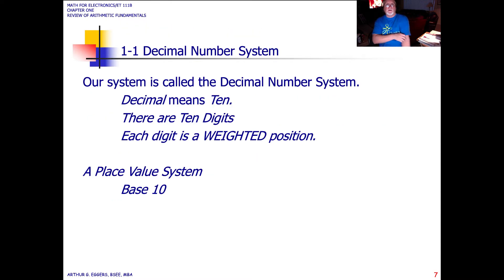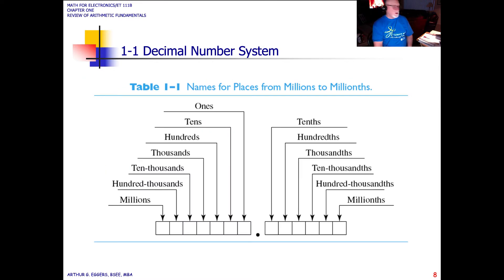So the decimal system means exactly, deci means 10, so 10 digits, in this case, 0 through 9, and then we start over again, starting at 10. Each digit is a weighted position within the base 10 or the place value system of base 10. This chart, to start with, you need to ingrain this into your memory. You need to have this at your fingertips. If you don't have a copy of it handy, make a copy of it and keep it handy so that you can continually refresh yourself until this becomes second nature.